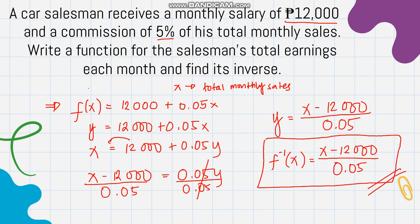So the original function is f(x) = 12,000 + 0.05x and its inverse is f⁻¹(x) = (x - 12,000)/0.05. That's it for today — I hope you learned something about inverse functions. See you next time.